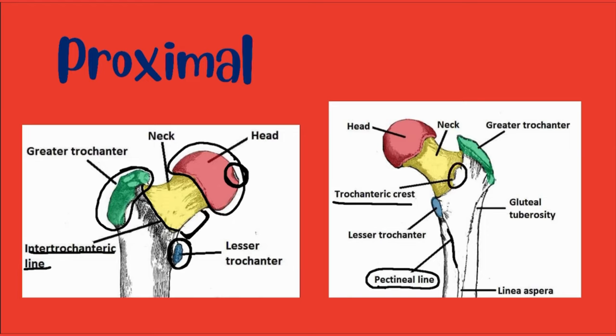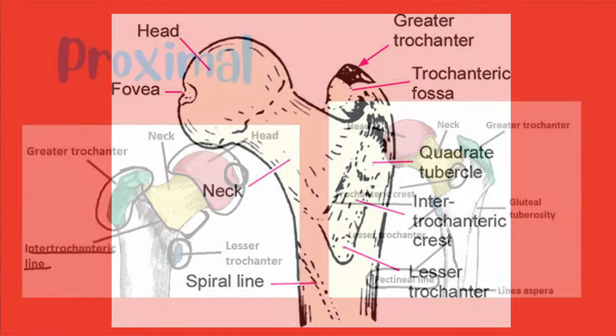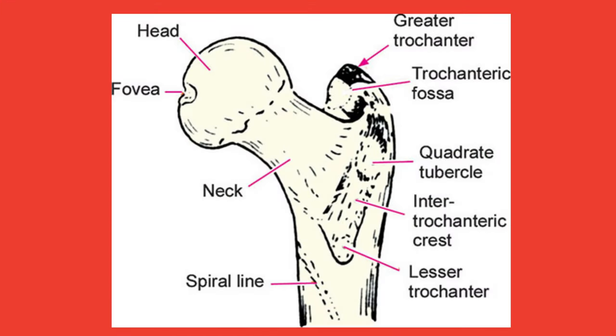The intertrochanteric crest, like the intertrochanteric line, is a ridge of bone that connects the two trochanters. It is located on the posterior surface of the femur. There is a round tubercle on its superior half called the quadrate tubercle.